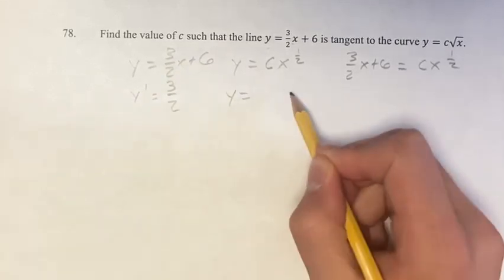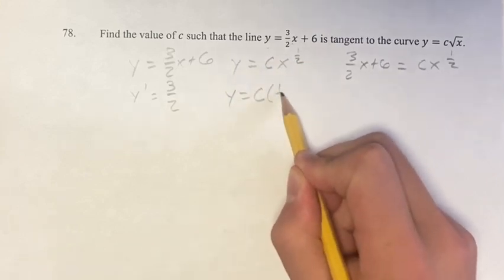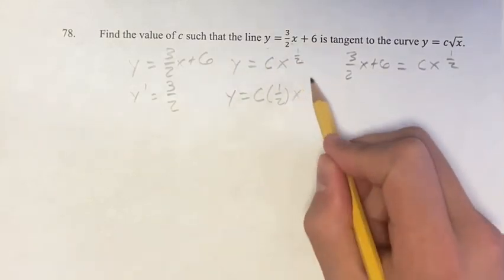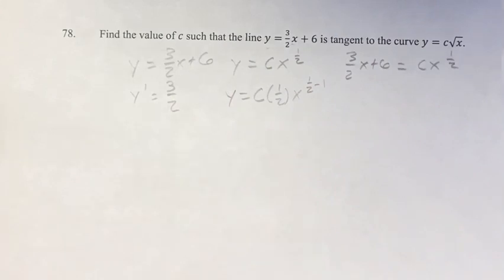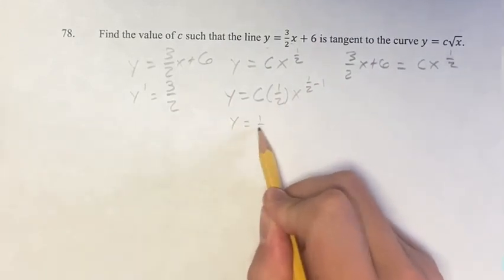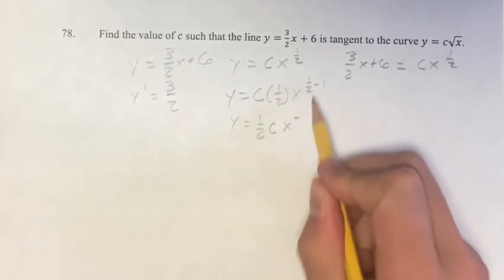And here we have c. We have a power function, so you bring down the exponent and then subtract 1 to get your new exponent. So this is 1 half cx to the negative 1 half.